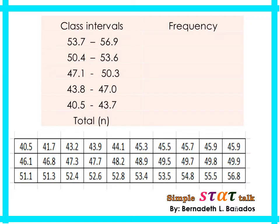Frequency means how many values are included in that class interval. Starting with the first interval, 40.5 to 43.7, we look back at the data set and count which values can be included. We count 40.5 — that is 1, 2, 3 — and there are only three values included in the first interval.